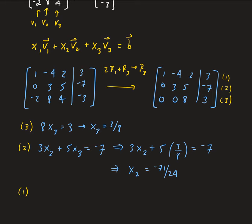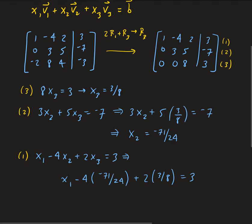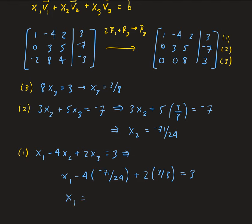Using equation 1, we have x1 minus 4 times x2 plus 2 times x3 equals 3. Substituting x2 = negative 71/24 and x3 = 3/8, and solving for x1, we end up getting minus 115 over 12.